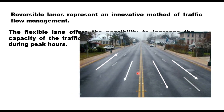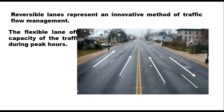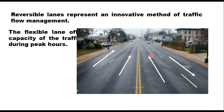So three lanes are now in one direction and one lane in the other. Similarly, during evening time, the lane can be reversed, giving three lanes in the opposite direction and one lane the other way. The number of lanes assigned to each direction of travel varies with the time of day depending upon the level of congestion in a particular direction.